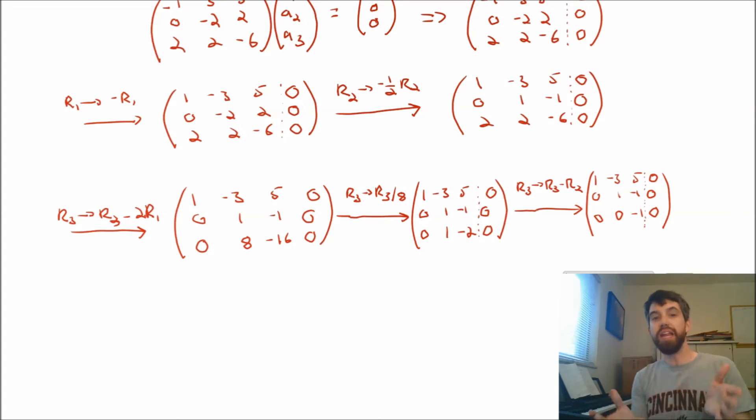So if I haven't made any mistakes, I've got into a correct row echelon form. And what I want to notice is that this particular system has a leading one in every single row and column. In other words, it has a unique solution.